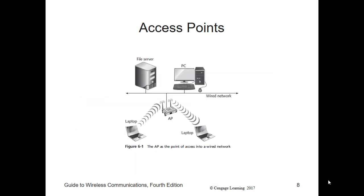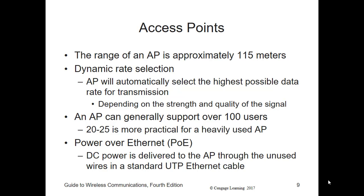The AP also acts as the wireless communication base station for a wireless network. With a few exceptions, all the wireless devices that connect to the AP use it to transmit to other wireless devices connected to the same AP. The AP can also act as a bridge between the wireless and wired network. The range of the access point typically is a maximum of about 375 feet on a really good day outside.